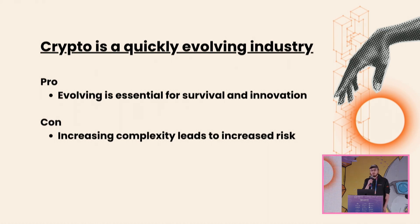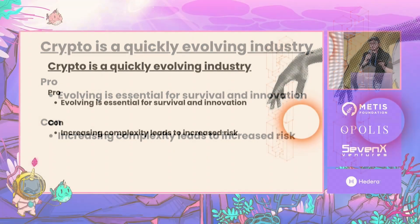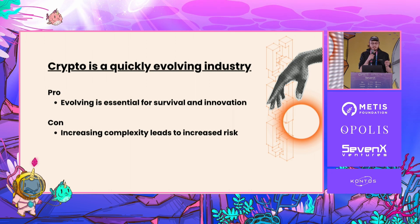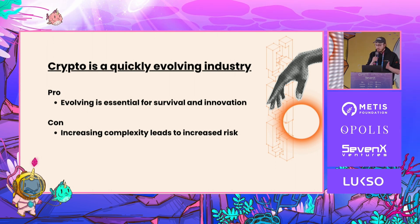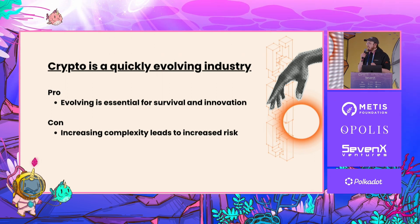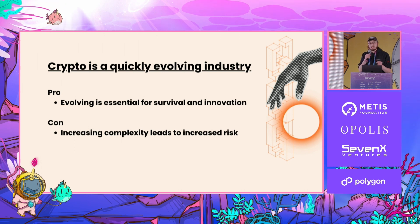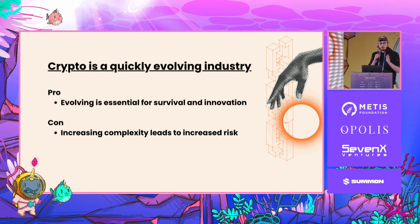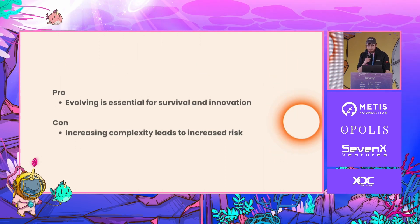Crypto is quickly evolving. The pro to that is that evolving is essential for survival and for innovation. Survival is something that most protocols care about the most — if you can survive a couple cycles, you can continue to grow TVL, grow users. But the con is that increasing complexity leads to increased risk. The parallel I like here is that back in the day, websites and services had maybe one, two, or three dependencies. Now they have like 15 different services. The same thing is going to happen in crypto, where rather than just using one oracle or one bridge, we're going to have protocols using like 15 different other protocols and tokens. There are risks associated with being connected to all those different protocols, and those protocols being connected to all these other different protocols.